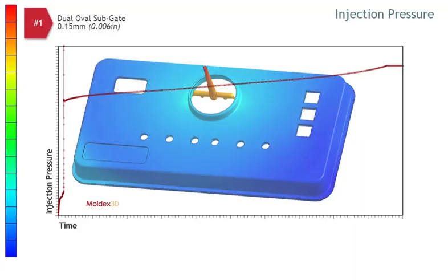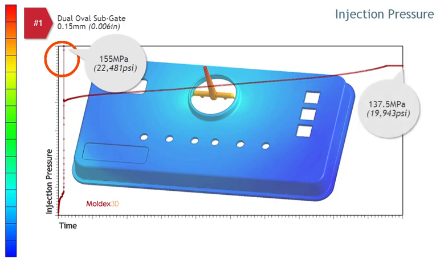Let's review the injection pressure requirements for our three examples. Here you can see the pressure requirement for the dual oval sub-gate design with a 0.15 mm gate. The pressure graph indicates that there is a spike of 155 MPa, which is a result of the small gate. The required pressure at fill is 137.5 MPa.